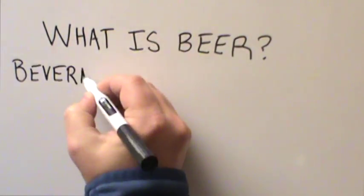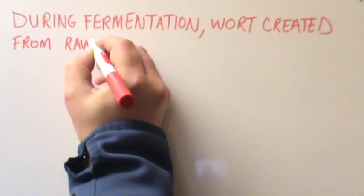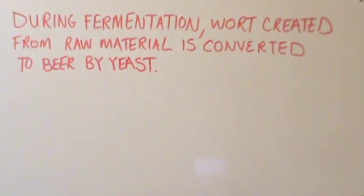Beer is a beverage that is made with malted cereal grains, hops, and water that is fermented by adding yeast. During fermentation, wort is created from raw material which is converted to beer by yeast.